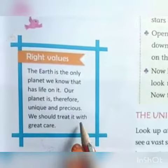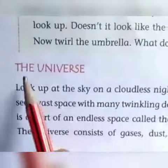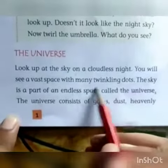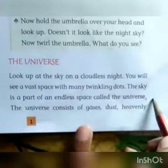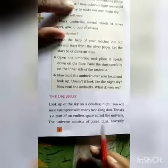We should treat it with great care — hume ise bohat acche se dekhna chahiye. Here we start with the universe. Look up at the sky on a cloudless night — jab hum raat mein be-badal aasman ko dekhte hain — you will find a vast space with many twinkling dots. The sky is a part of an endless space called the universe — aasman ki is na khatam hone wali jagah ko universe, yaani ki brahmand kehte hain.